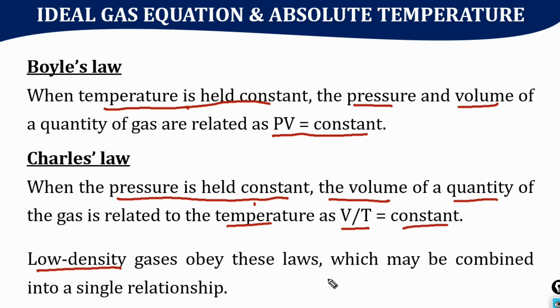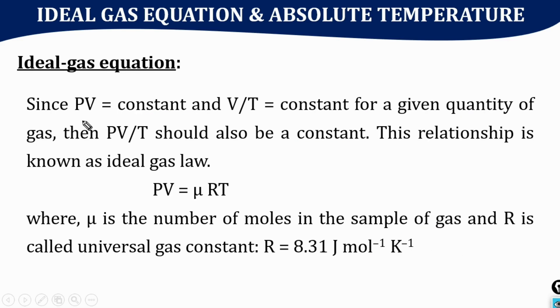Now we will combine these into a single relationship. According to Boyle's law, PV is constant. According to Charles's law, V/T is constant. For a given mass of gas, if we combine these, P times V divided by T should also be constant.